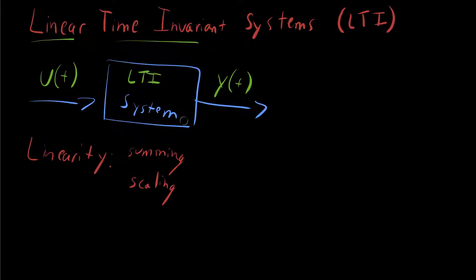What this means is that if you have a linear system with an input u1(t) and another input u2(t), when you pass u1(t) through a linear system, you get out y1(t).